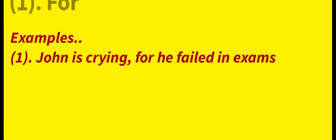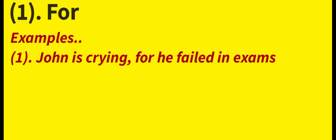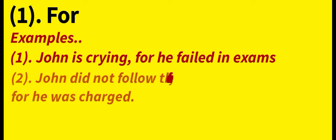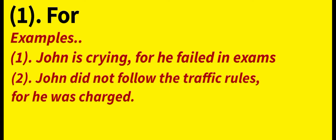The first coordinating conjunction is 'For.' Example: 'John is crying for he failed in exams.' One important thing — when 'for' is used as a conjunction, the second sentence gives the reason for what happened in the first sentence, and both belong to the same clause type. Next example: 'John didn't follow the traffic rules, for he was charged.'